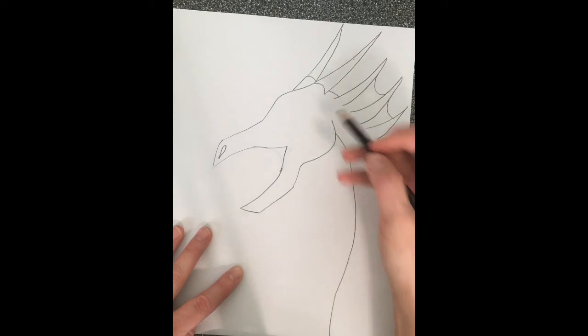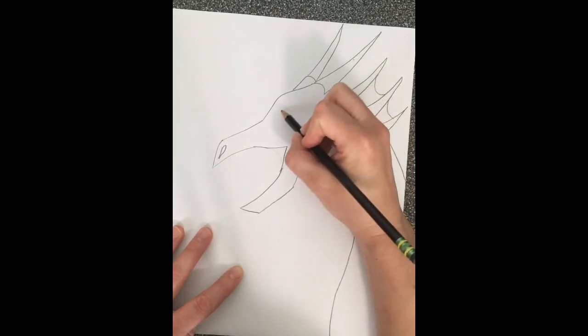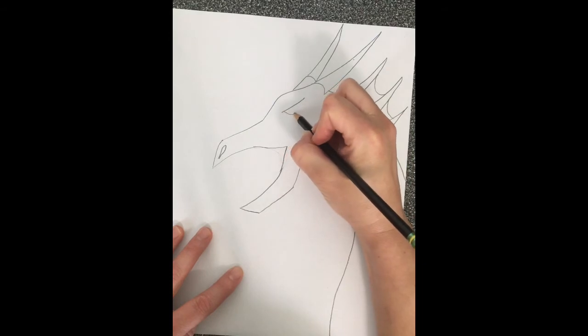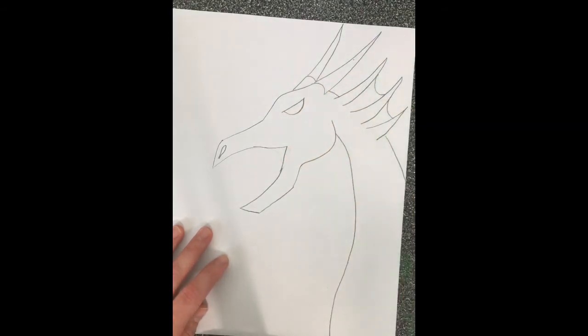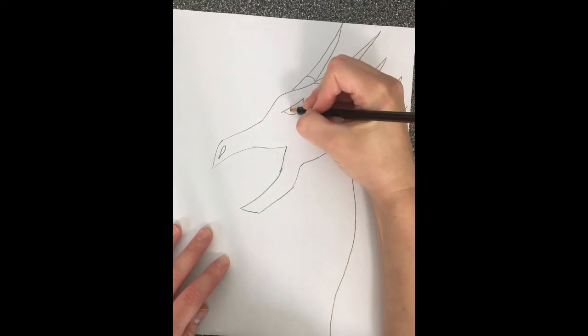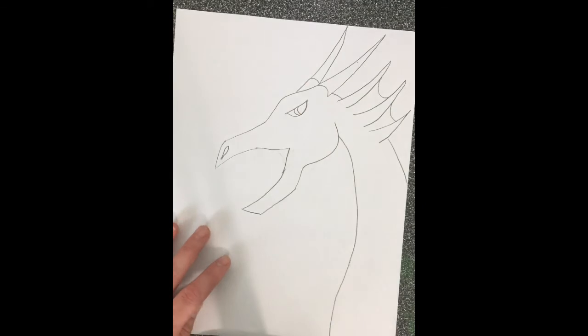For the eye I'm going to make this dragon look a little bit fierce so I'm going to draw a line there and then I'm going to draw like an upside down rainbow. And then I'm going to make kind of like a lizard eye so I'm going to do almost like a crescent moon cut off in the middle there.